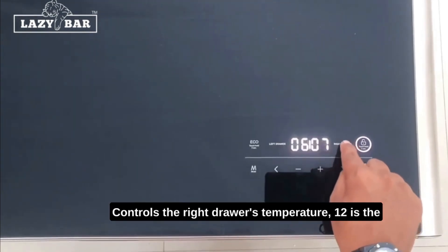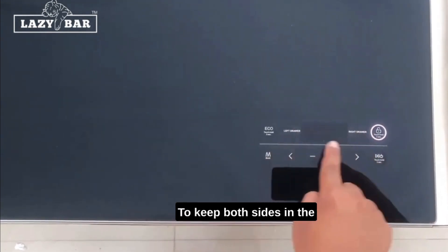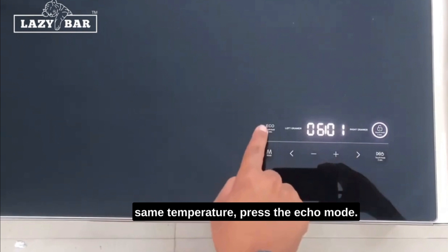This controls the right drawer's temperature. 12 is the minimum temperature and 1 is the maximum temperature. To keep both sides at the same temperature, press the Echo Mode.